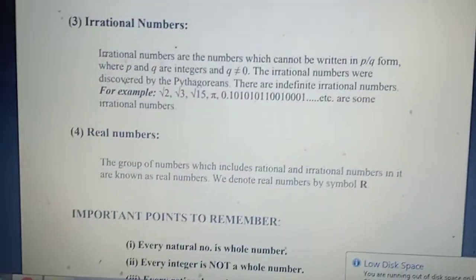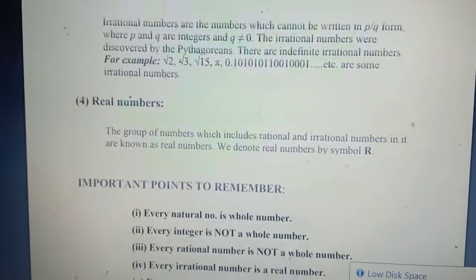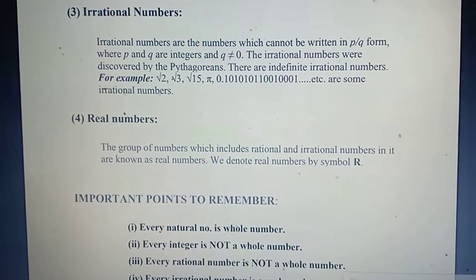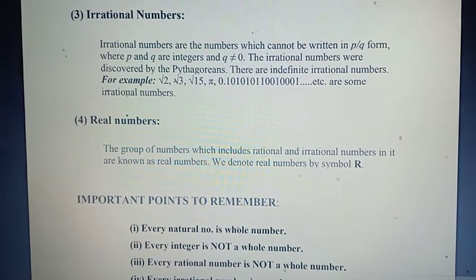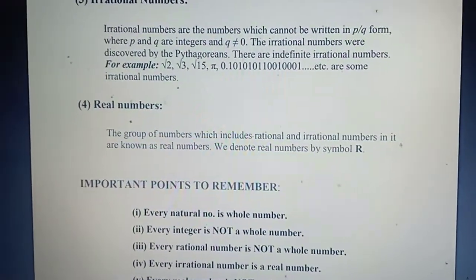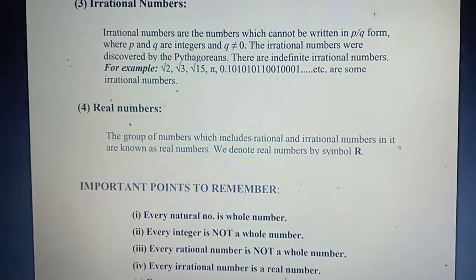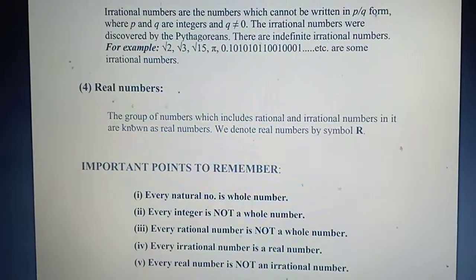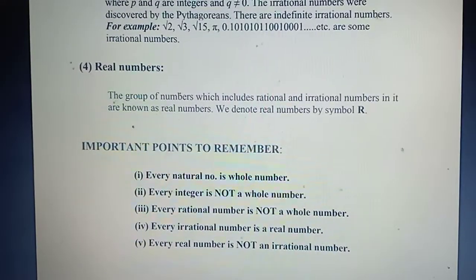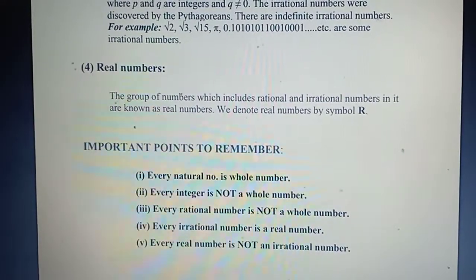Now we come to real numbers. The group of numbers which includes rational and irrational numbers is known as real numbers. We denote real numbers by the symbol capital R.